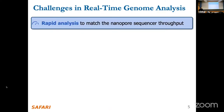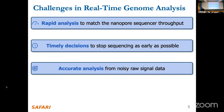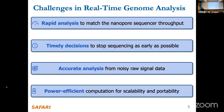There are also certain challenges for real-time genome analysis. First, we need to match the throughput of the nanopore device to enable real-time analysis. Second, we need to make timely decisions quickly, because we want to stop the sequencing of DNA as soon as possible. Third, we want to make accurate analysis, because the raw signals are usually noisy. Fourth, we want to make all these computations power-efficient, since these sequencers can be used with mobile devices that have limited computational resources and battery.